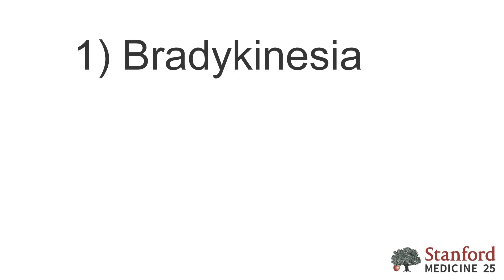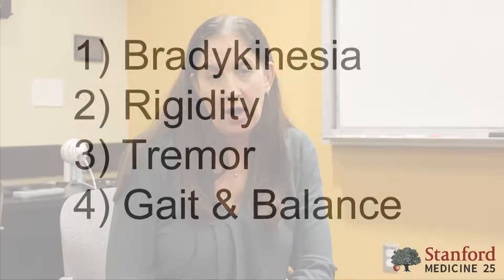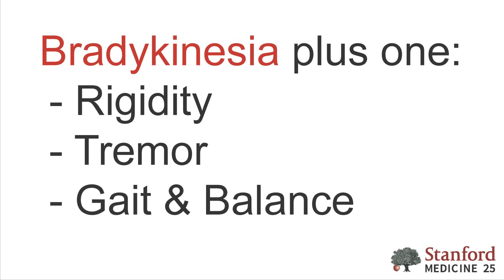We're going to be focusing on the four primary elements of the exam. The first one is bradykinesia, and it's the most important because you have to have bradykinesia in order to give a diagnosis of Parkinsonism. The other three elements — rigidity, tremor, and gait and balance problems — are also very important, but you don't have to have them to make the diagnosis. You have to have bradykinesia and one of those other three.